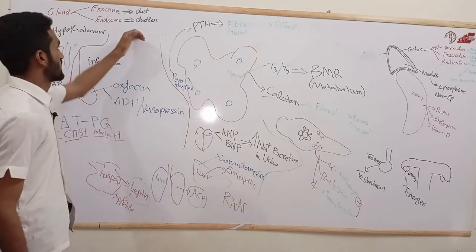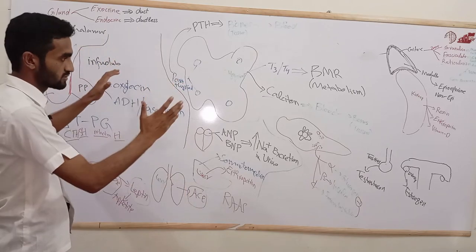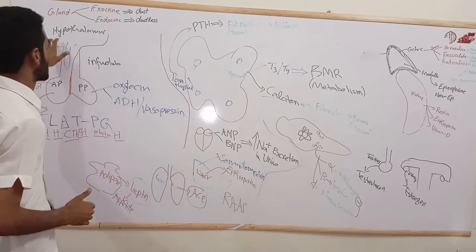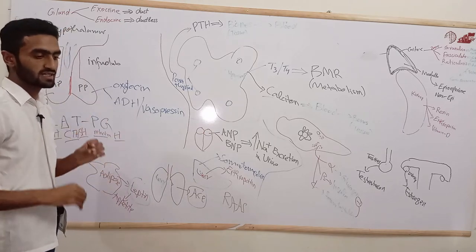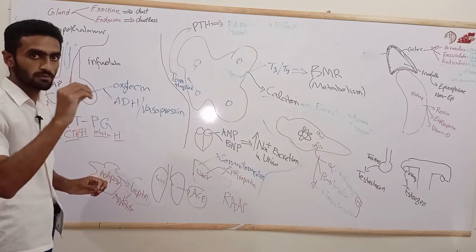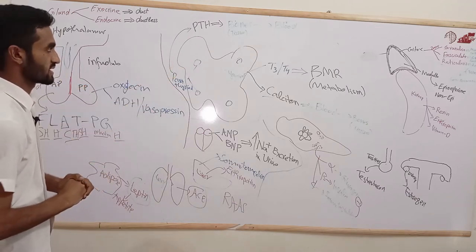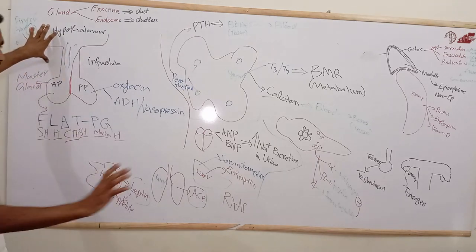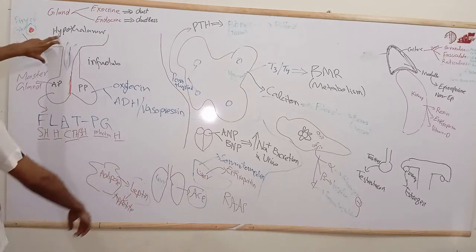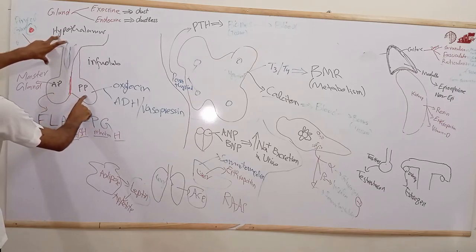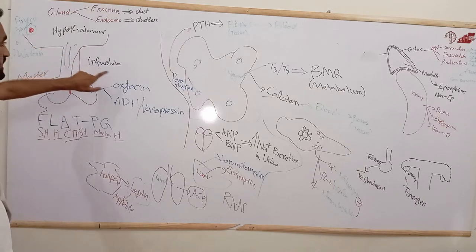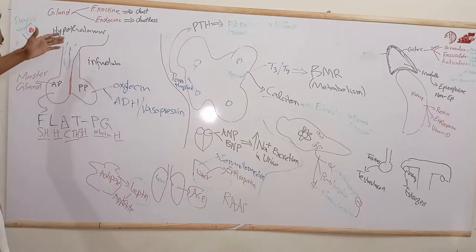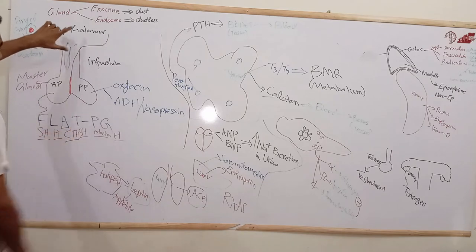Hormones such as those from the hypothalamus, anterior pituitary, and posterior pituitary are from endocrine glands — they secrete into the blood and finally reach the target tissue. The hypothalamus is connected to the anterior pituitary by the infundibulum, which contains nerves, arteries, veins, and other structures.